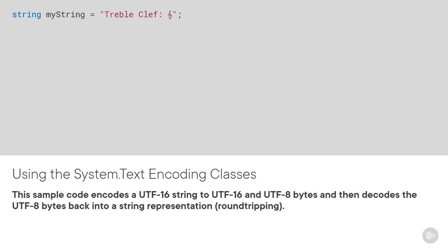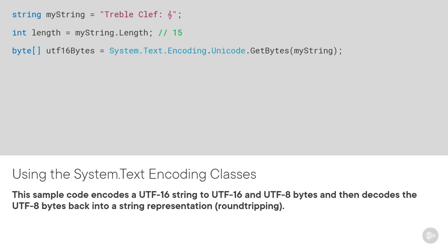We can start with a regular string literal. C# string literals are UTF-16 encoded and support the inclusion of higher Unicode code point characters, such as the treble clef at the end of this string. If we check the length of this string, we'll learn that it contains 15 characters. But if we manually count these characters, we'd actually get a count of 14. The treble clef is an example of a surrogate pair, which requires two chars to represent the element. The length of the string is the count of the number of chars, not the individual text elements. When we convert this to UTF-16 bytes using the encoding.unicode.getBytes method and check the length, we get 30 as the result. Each C# char requires two bytes to encode using UTF-16 encoding.